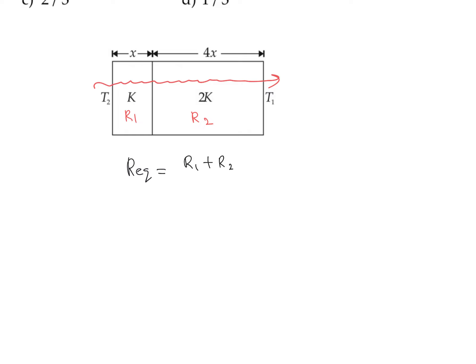L/(KA). So we can write R1 as x/(KA) plus R2, which is 4x divided by